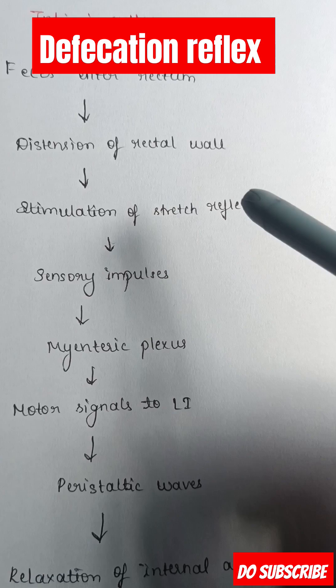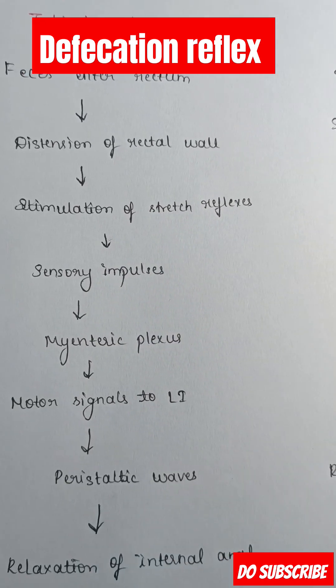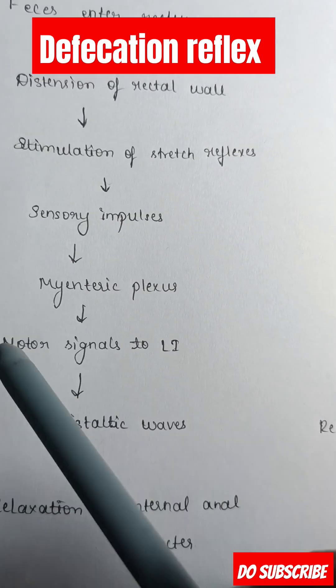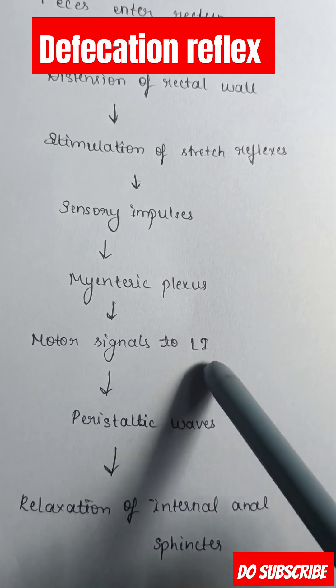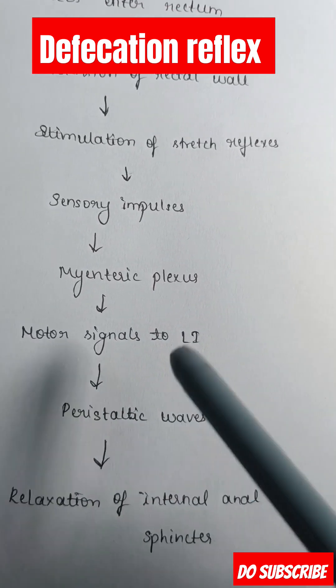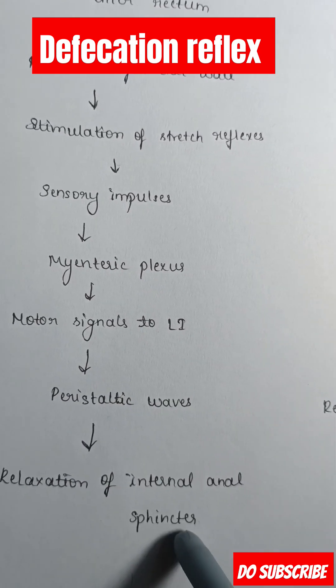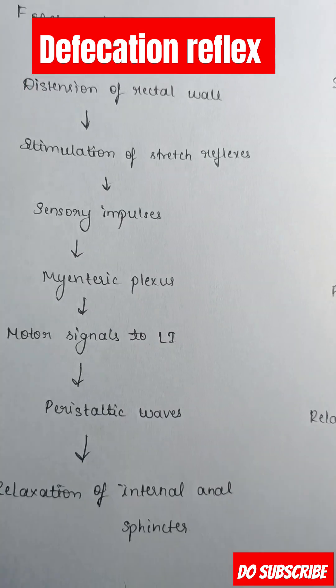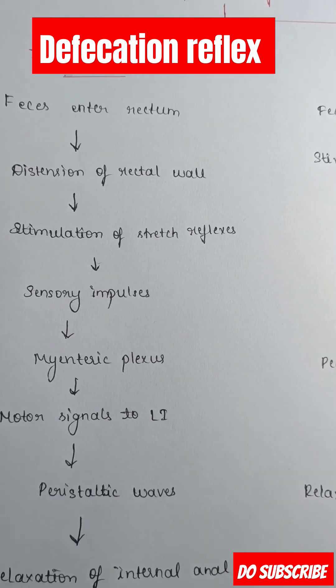This is carried through sensory impulses through the myenteric plexus. Motor signals are carried to the last intestine where peristaltic waves take place. These peristaltic waves further lead to the relaxation of the internal anal sphincter, which causes the defecation.